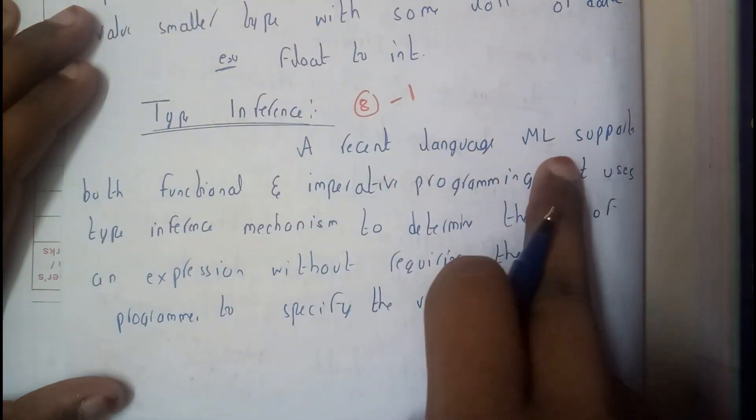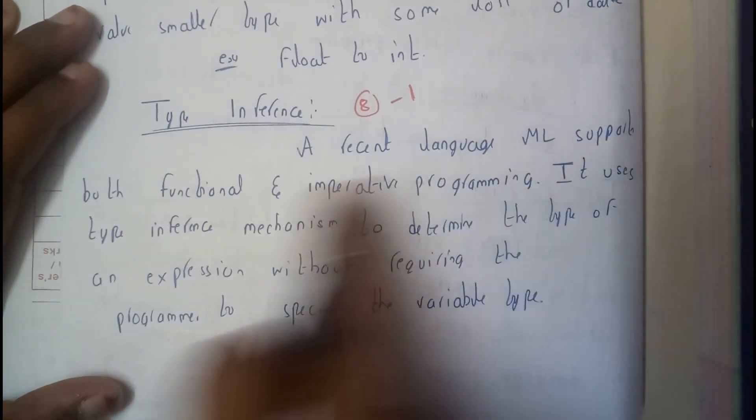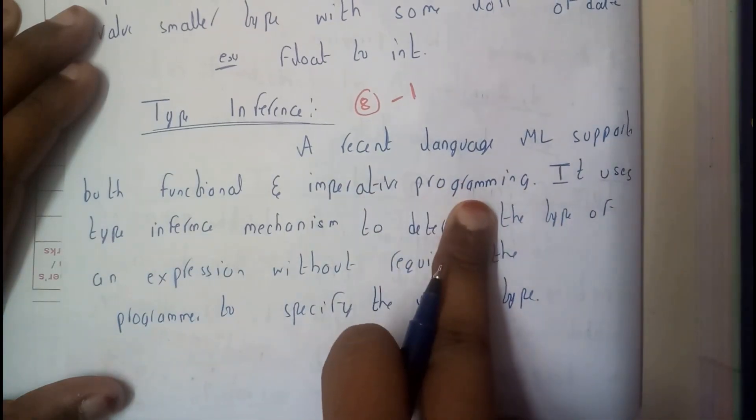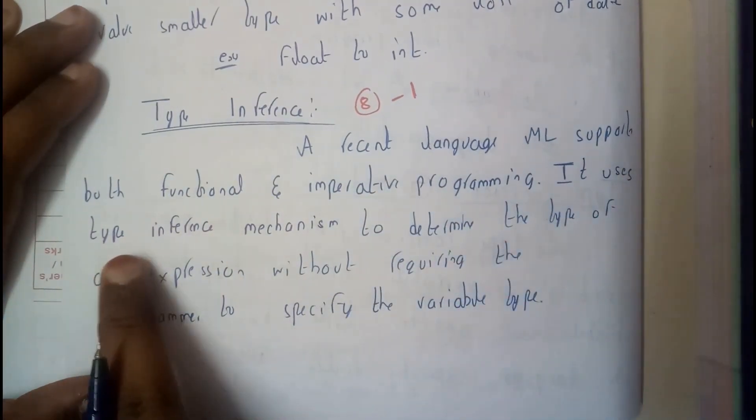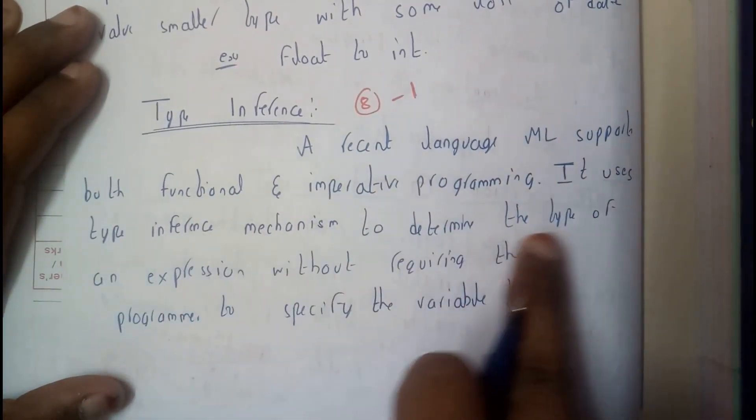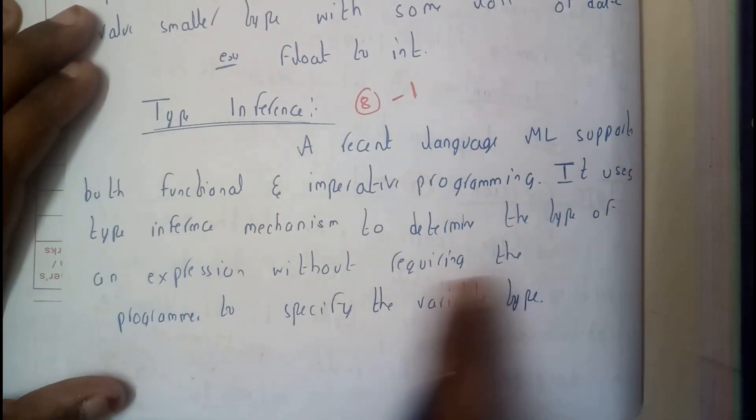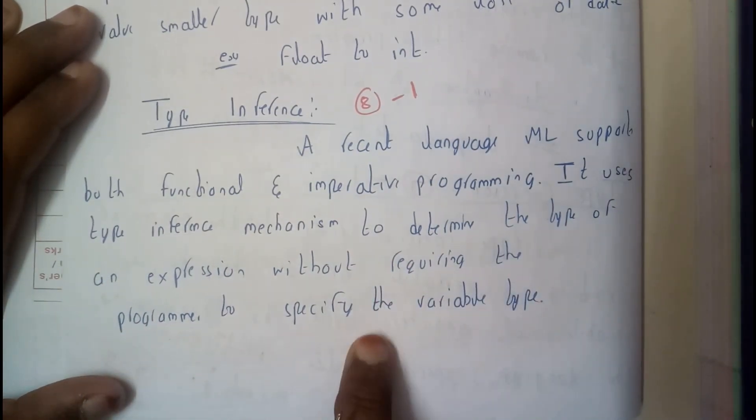A recent language, ML, supports both functional and imperative programming. It uses the type interfacing mechanism to determine the type of an expression without requiring the program to specify the variable type.